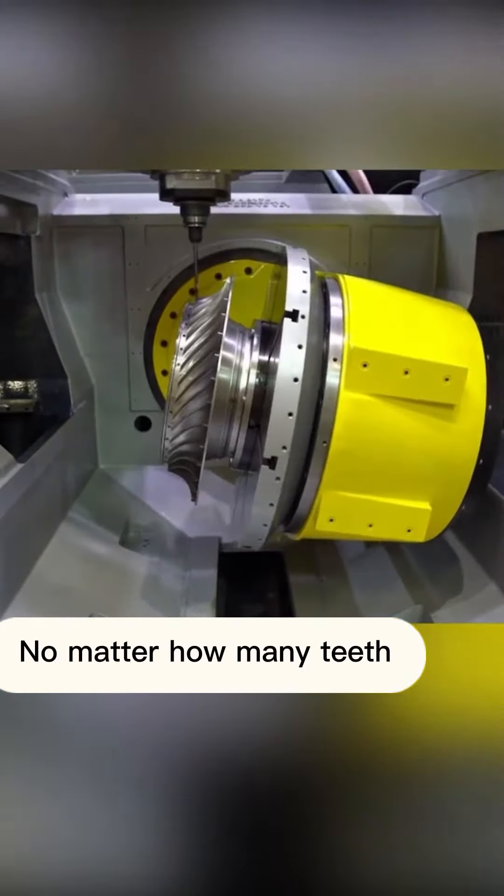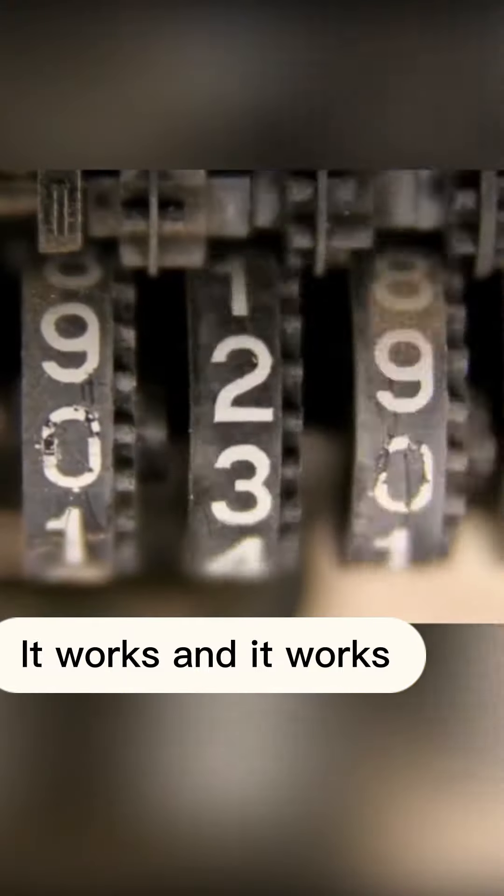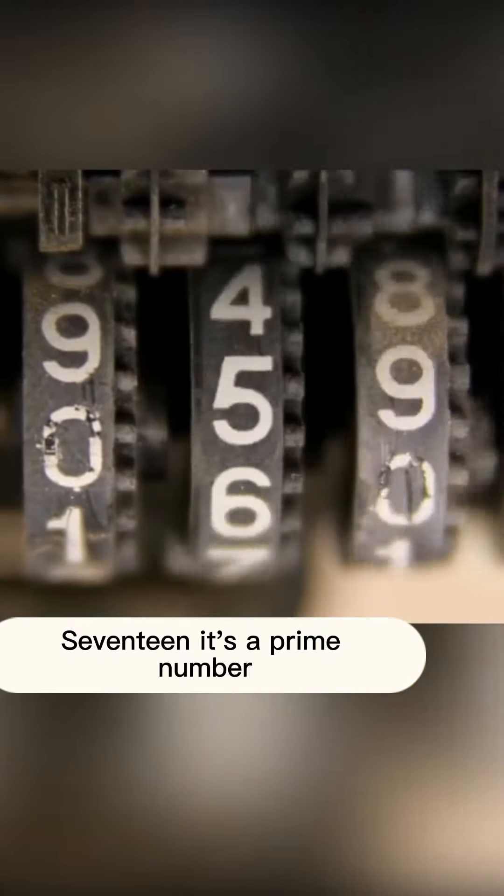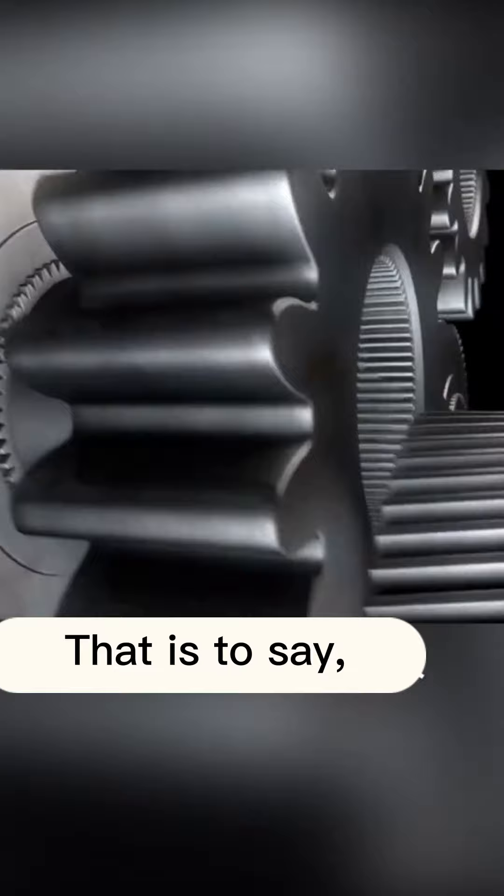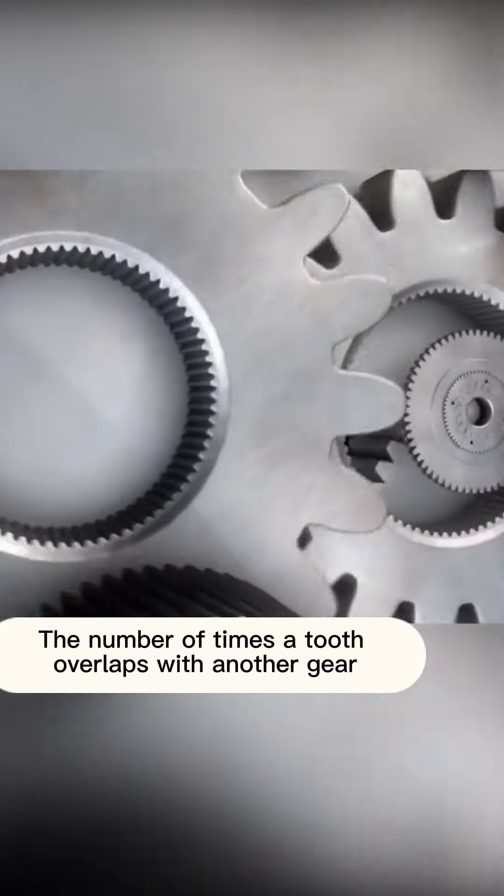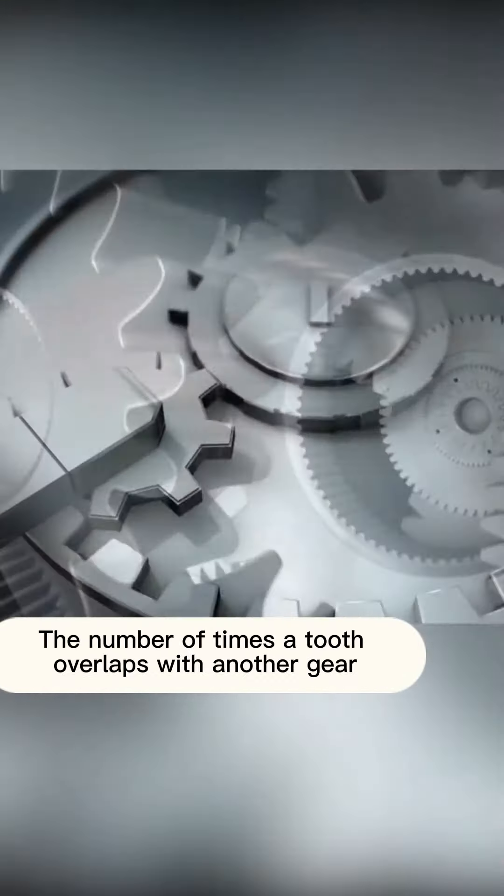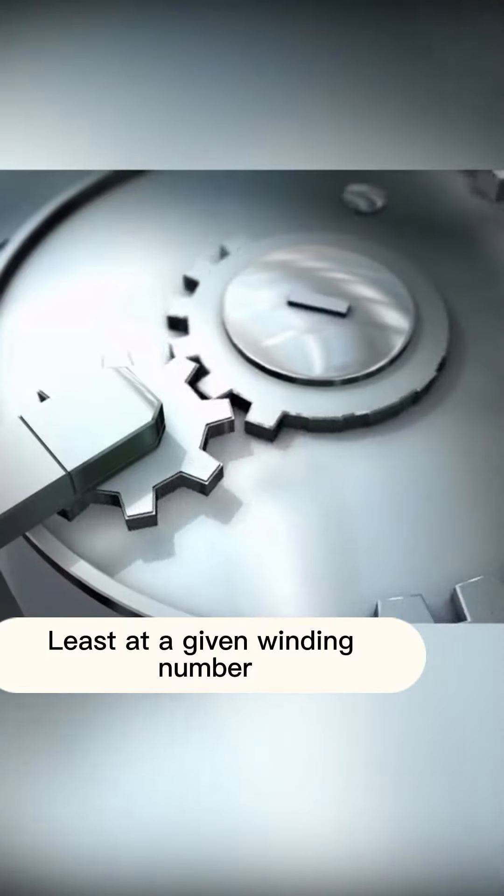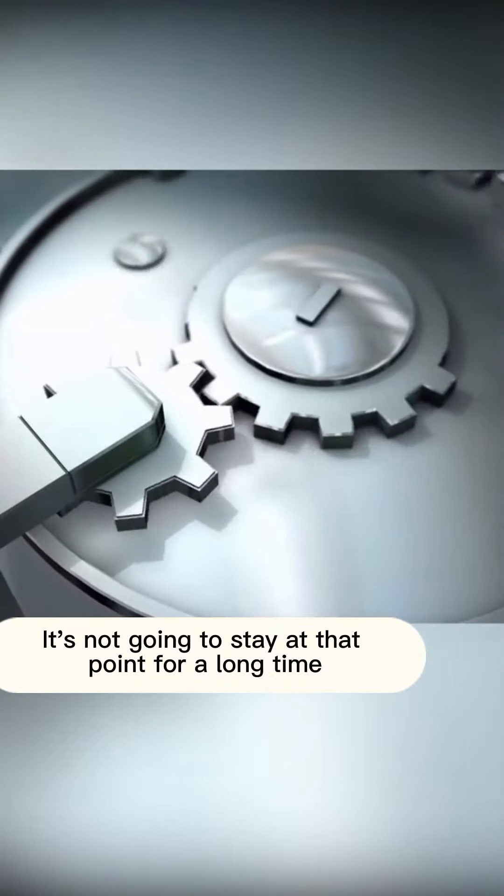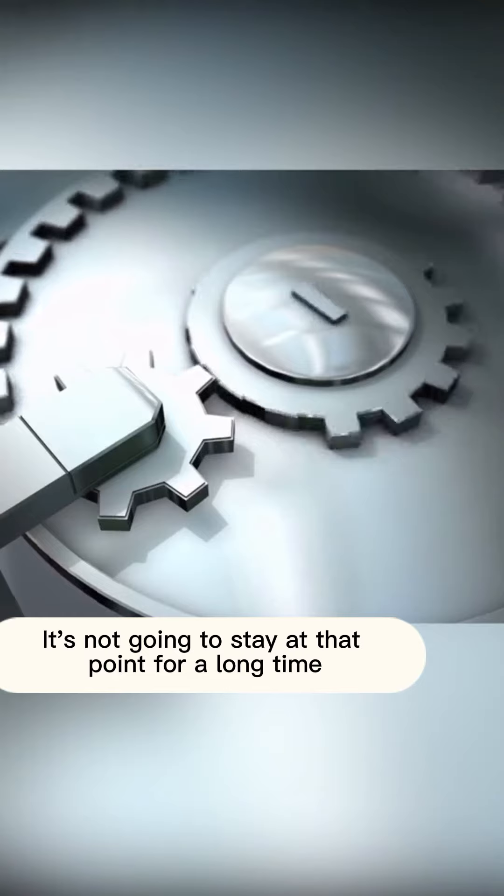No matter how many teeth, it works and it works. 17 is a prime number. That is tooth A, the gear, the number of arms, tooth of A with another gear. At least at a given winding number, it's not going to stay at that point for a long time.